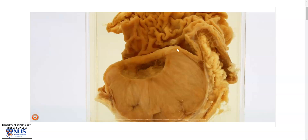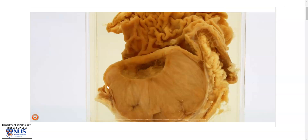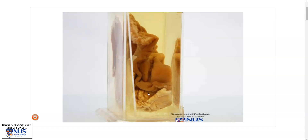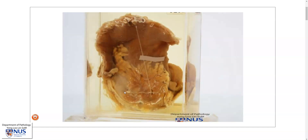It appears to be arising from deep to the mucosa, and this dark brown layer is the muscularis propria, so it could possibly be arising from the muscularis propria. Here we can see the overlying mucosa, which is separate from the tumor. This is the side view where we can see that the mucosa is stretched over the tumor, but it is distinct from the tumor, and this is the serosal surface.